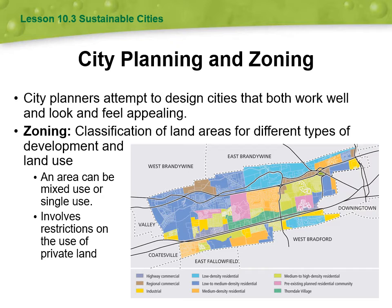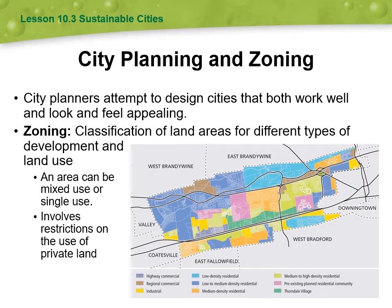Looking at the map, you can see highly commercial areas filled with shopping, and regional commercial areas that are less developed. Industrial zones are placed carefully in new cities because of the waste they produce. Then there's residential: low density is suburban, higher density might have some apartment buildings, medium density is mostly apartment buildings, and high density consists of tall apartment buildings with lots of units.